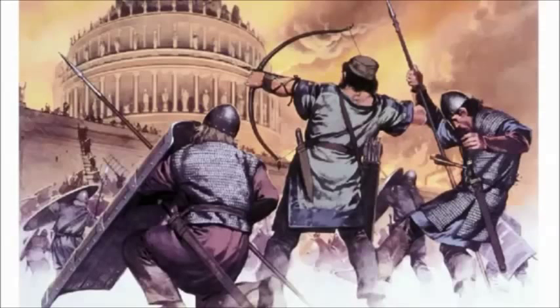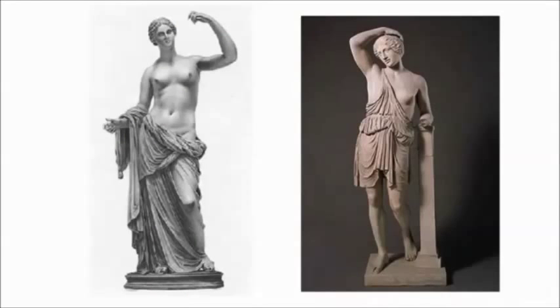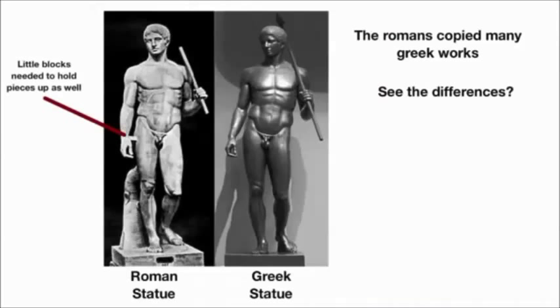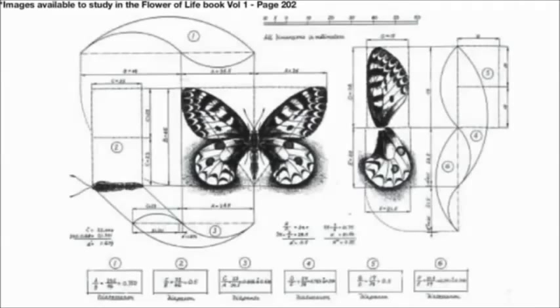Fibonacci and the importance of these sequences. When the Romans took over Greece, you could see the perfection in statues just completely disappear. I'm not saying the Romans were bad artists. They just didn't measure everything to the same caliber that the Greeks did.